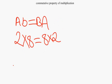Commutative Property of Multiplication: The order of the factors does not affect the product. Algebraically, we say AB equals BA. Here is an example with numbers. 2 times 8 equals 8 times 2.